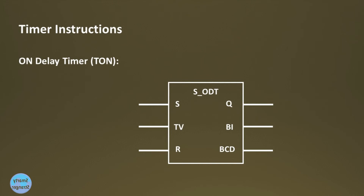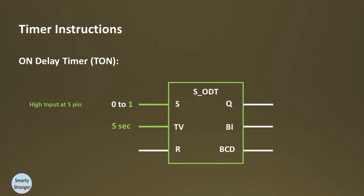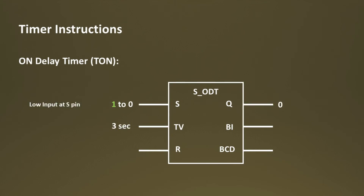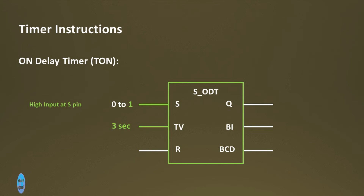Our next timer is the On Delay timer. When you need a delay in your logic operation — that is, the output should be energized after some time — you should use the On Delay timer. When S input detects a change from 0 to 1, the timer starts its timing and output Q waits for completion of the set time. When the set timing completes, the output is energized and remains energized until S pin changes from 1 to 0. If S changes from 1 to 0 before time elapses, the timer stops. If S changes again from 0 to 1, the timer restarts from the set value. If there is a high signal on R input while the timer is running, the timer and output stop immediately.